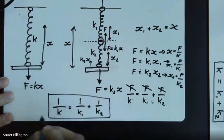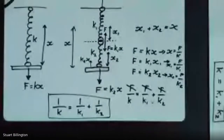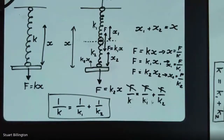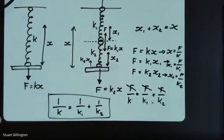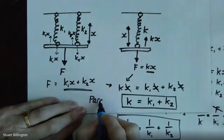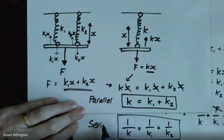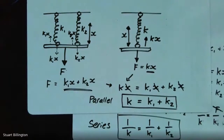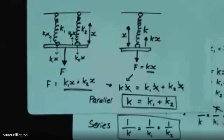Bringing both equations together: for springs in parallel k = k1 + k2, and for springs in series 1/k = 1/k1 + 1/k2. You should recognize that pair of equations - there's something slightly odd about them. Where do you recognize them from, and what's the odd thing? Feel free to unmute or type in the chat.